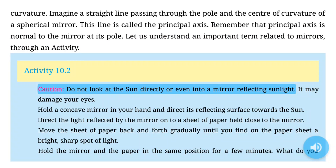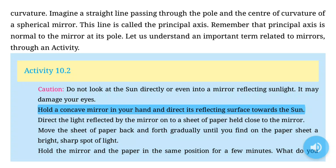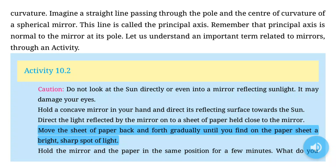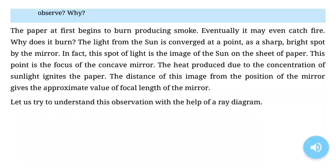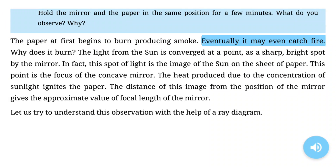Activity 10.2 — Caution: do not look at the sun directly or even into a mirror reflecting sunlight. It may damage your eyes. Hold a concave mirror in your hand and direct its reflecting surface towards the sun. Direct the light reflected by the mirror onto a sheet of paper held close to the mirror. Move the sheet of paper back and forth gradually until you find a bright, sharp spot of light. Hold the mirror and the paper in the same position for a few minutes. The paper at first begins to burn producing smoke. Eventually it may even catch fire.